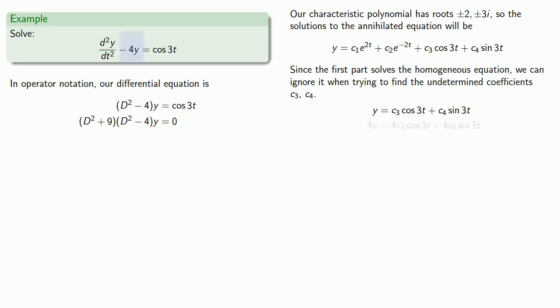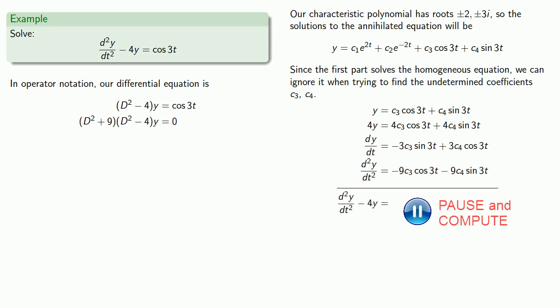We need 4y and we need the second derivative of y. And our second derivative minus 4y is -13c₃cos(3t) - 13c₄sin(3t). Now we want that to be cosine of 3t. If we compare our coefficients, we see that -13c₃, the coefficient of cosine 3t, has to be equal to 1, the coefficient of cosine 3t.